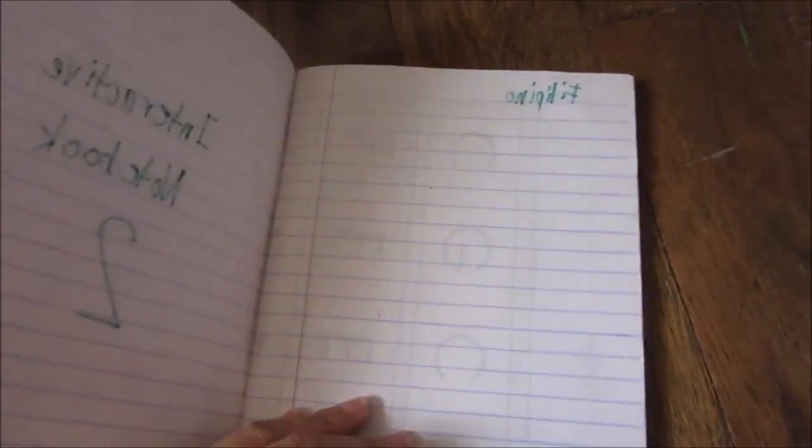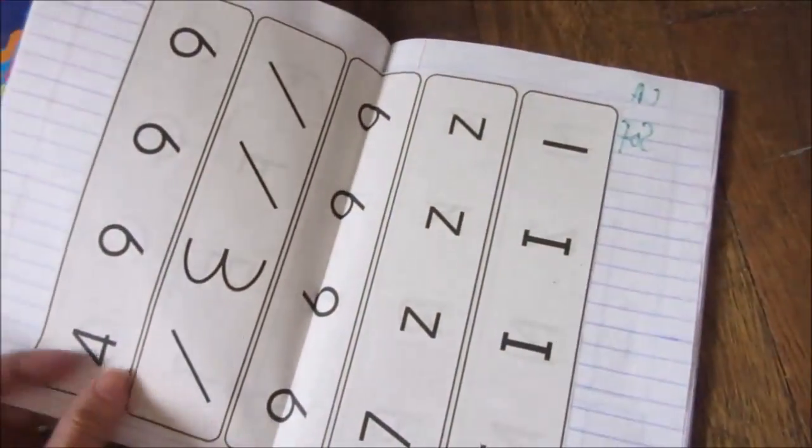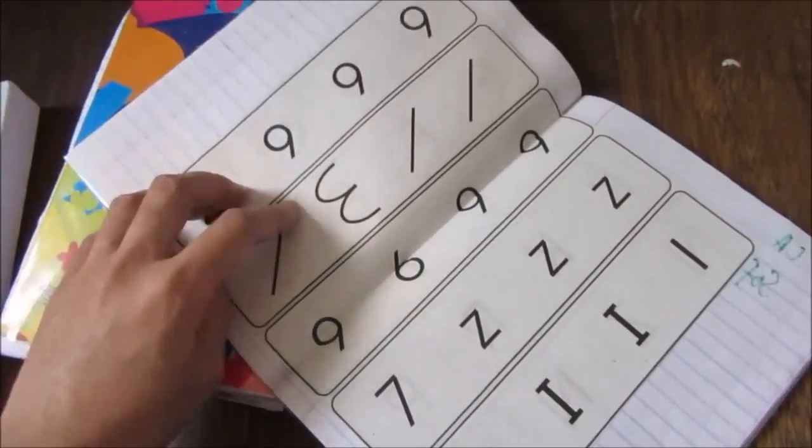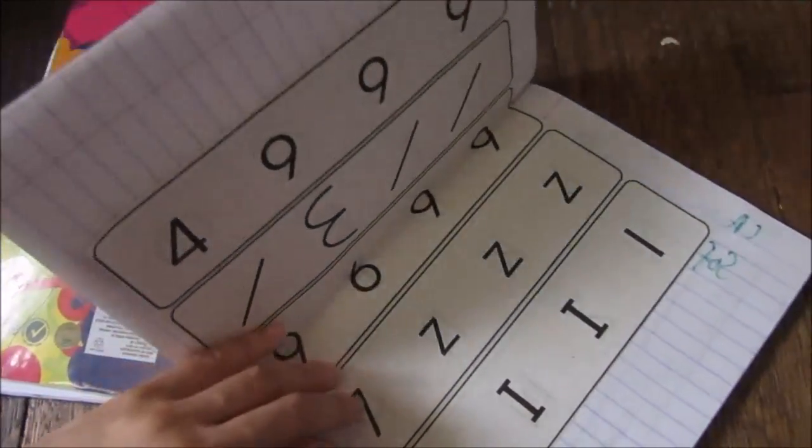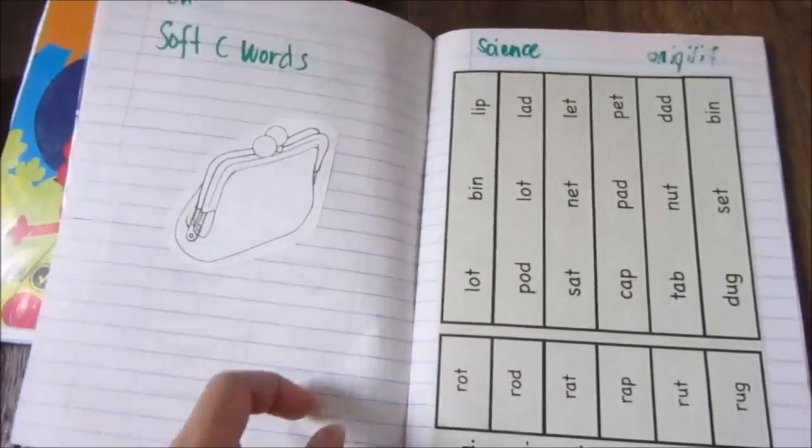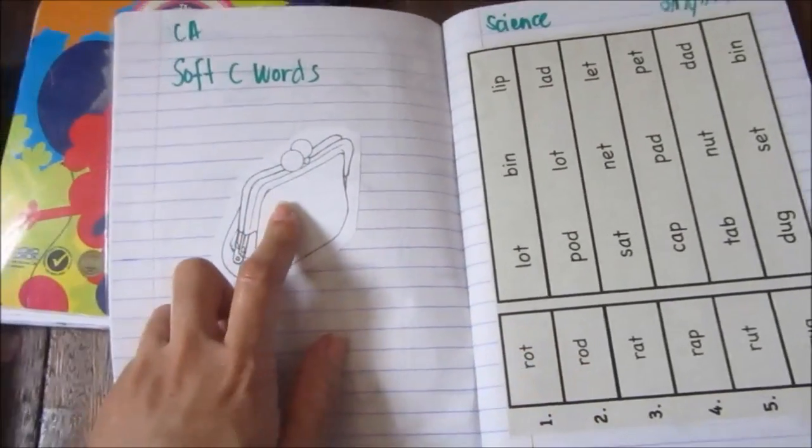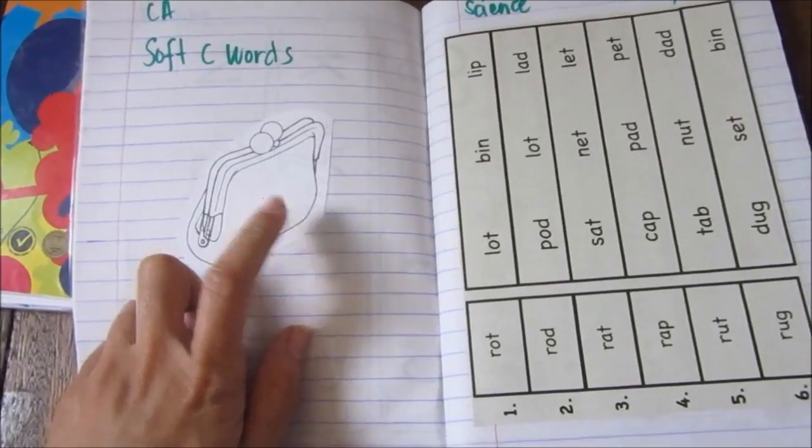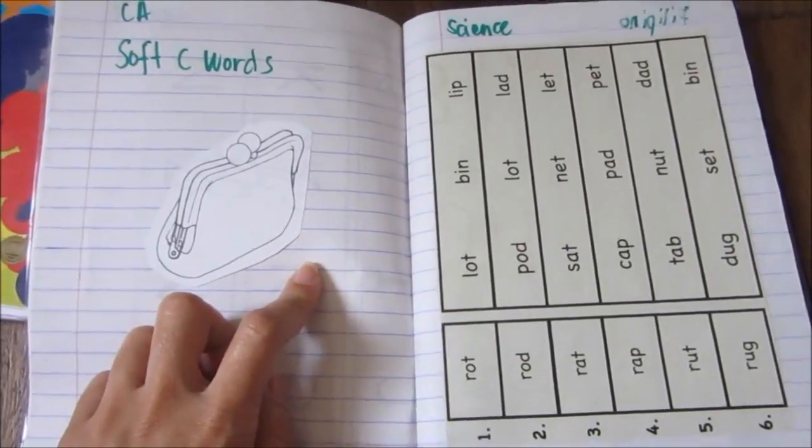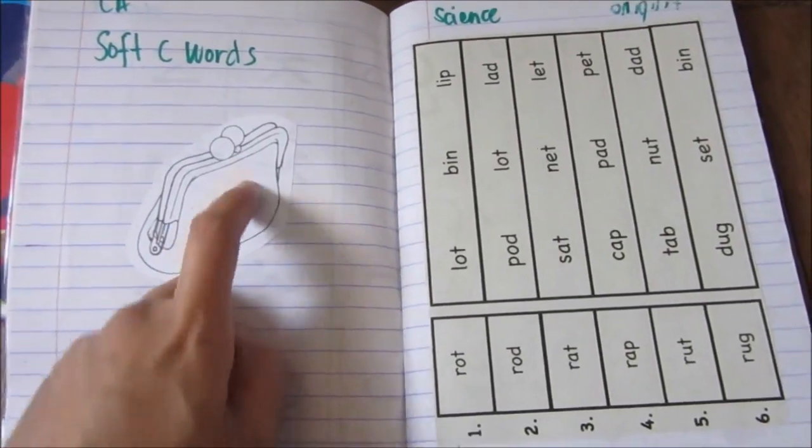And we have another notebook here. This is for Filipino, just getting the odd one out. And then for CA, we have the soft C words. I have a bunch of words that he will read and then he will glue them inside the purse.